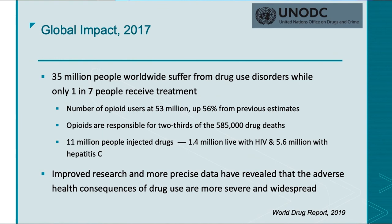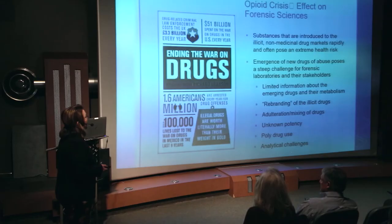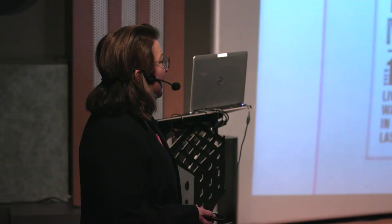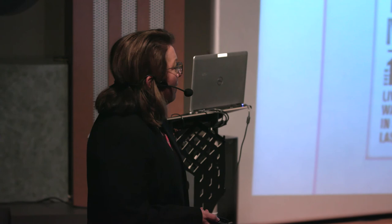The opioid crisis is really challenging for forensic sciences because there are so many different opioids that we can't identify them fast enough. In 2017 alone, over 500 new illicit drugs appeared, and for every single one we have to develop methods to identify them. It's a cat-and-mouse game — everything is changing on a daily basis, and we're constantly having to redevelop our science.